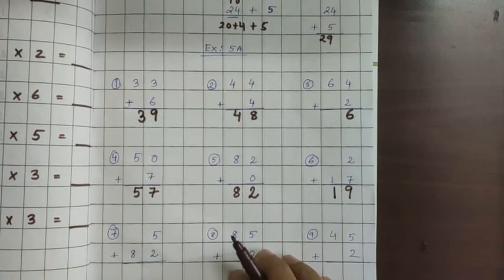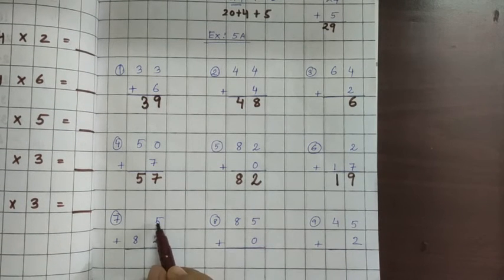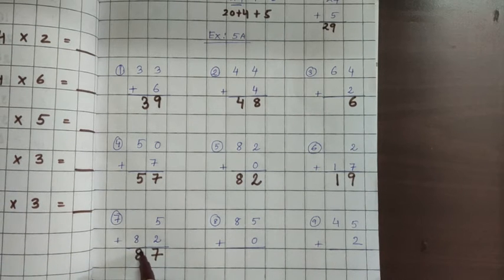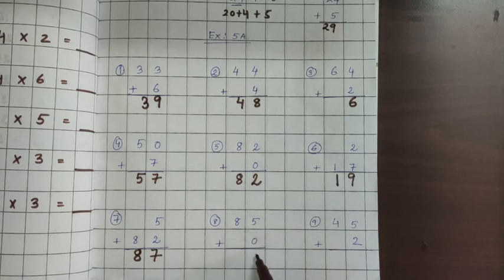Let us go to the next. 7th one you see that 5 up is there, here nothing is there. Down 82 is there. So 5 keep it in your mind, 2 you count: 5, 6, 7. And 8 up nothing is there, directly 8 will come. Next one, 5 down 0 is there. 5 plus 0 is 5. 8 down nothing is there, 8 directly it will come.